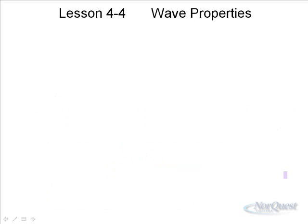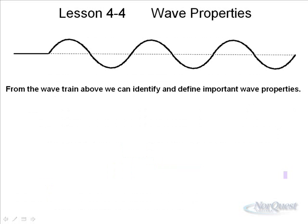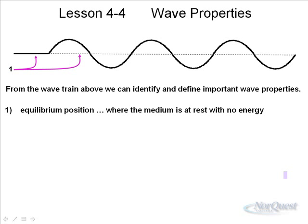We can look at a wave diagram and identify some of its properties. From the wave train shown, we can identify and define some important wave properties that you should know. The dotted line represents the equilibrium position, where the medium would be at rest.